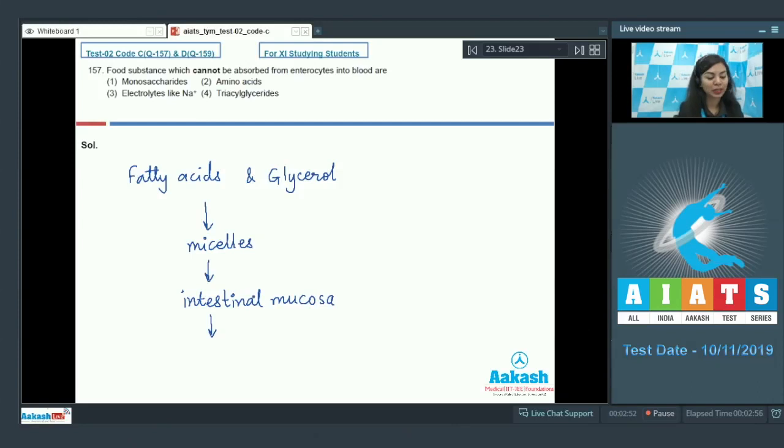Then they are rearranged into very small protein-coated fat globules called chylomicrons, which are transported to the lacteals (lymph vessels in the villi), and from these lacteals they are ultimately released into the bloodstream. The right answer is option number 4, triacylglycerides, whereas others are absorbed directly into the blood.